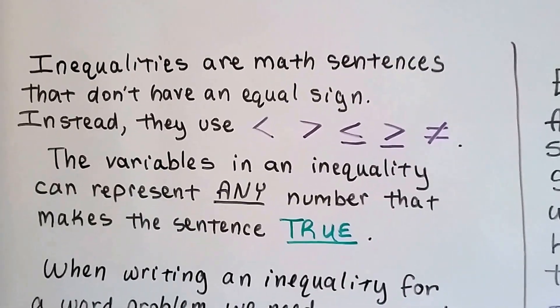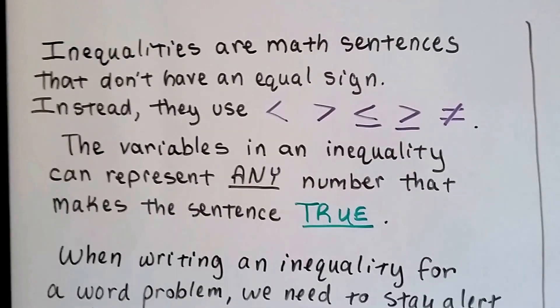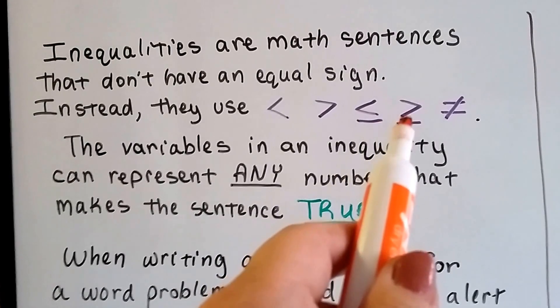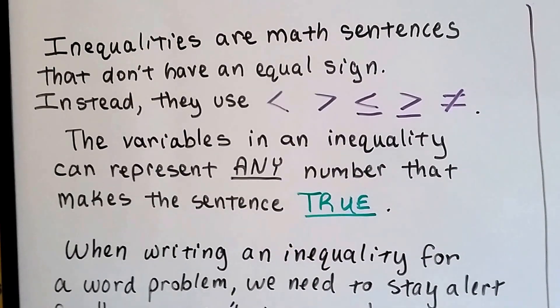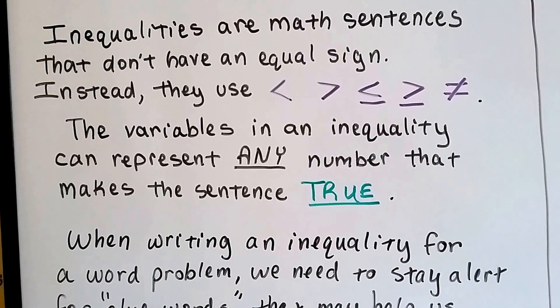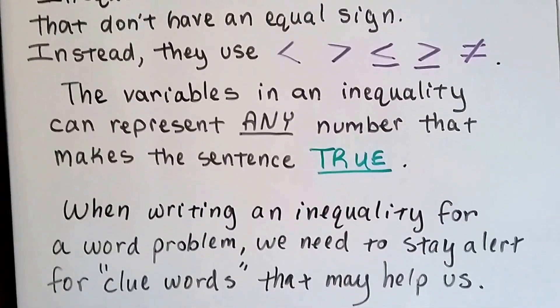We've been studying inequalities and we know they're math sentences that don't have an equal sign. Instead they use these symbols: less than, greater than, less than or equal to, greater than or equal to, or not equal to. And the variables in an inequality can represent any number that makes the sentence true. So it could be a wide range of numbers that make it true.